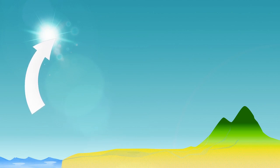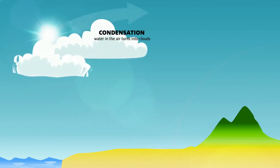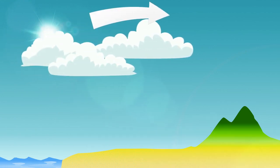Once the water is back in the air, it eventually undergoes condensation. That's when it cools and forms clouds. The clouds move as the wind pushes them to new places.